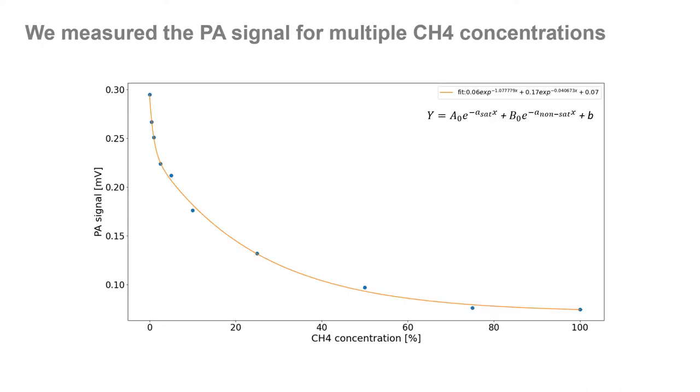With this, we were able to test several known concentrations of target gas in the atmospheric cell and measure the corresponding photoacoustic signal. By fitting an exponential function, we can then deduce an unknown gas concentration by simply finding the concentration value corresponding to the observed signal.